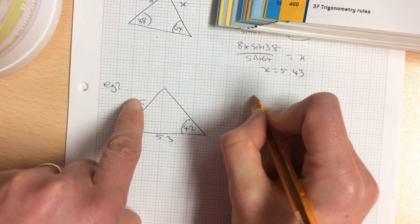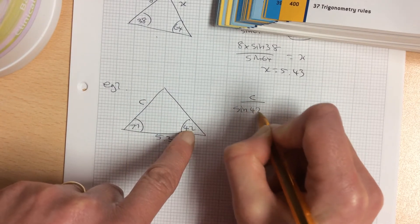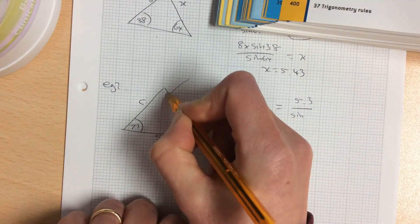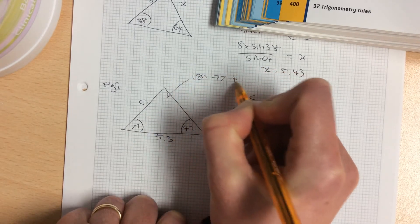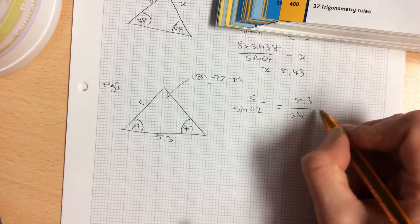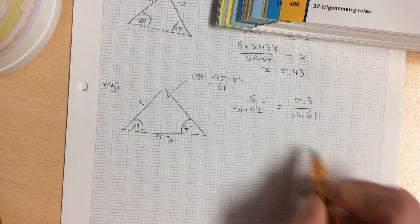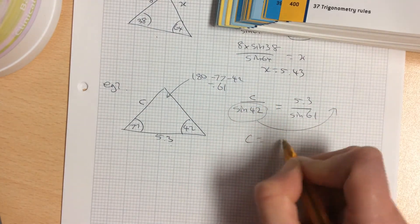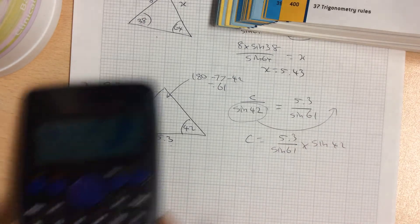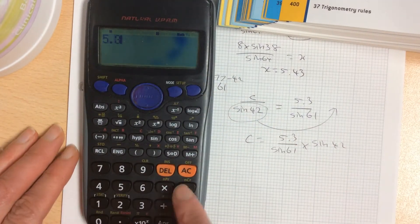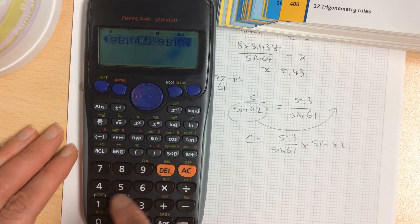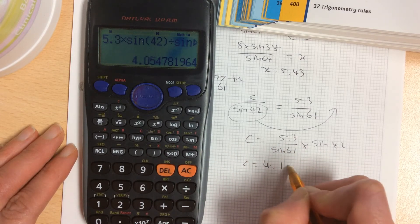The sine rule is side over sine the opposite angle. I've got to work this angle out first. 180 minus 77 minus 42 gives me 61. So I'm looking for c. Bring this across and multiply. So c is 5.3 over sine 61 times sine 42. In the calculator I do the multiplication first: 5.3 times sine 42, close bracket, divide by sine 61, gives you c of 4.1 cm.